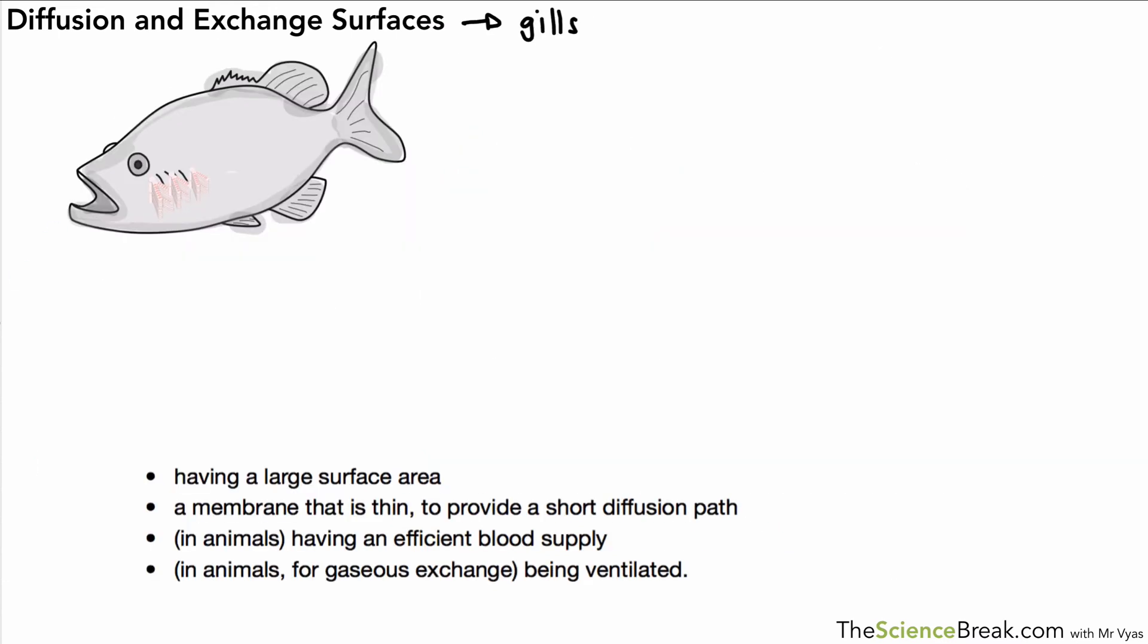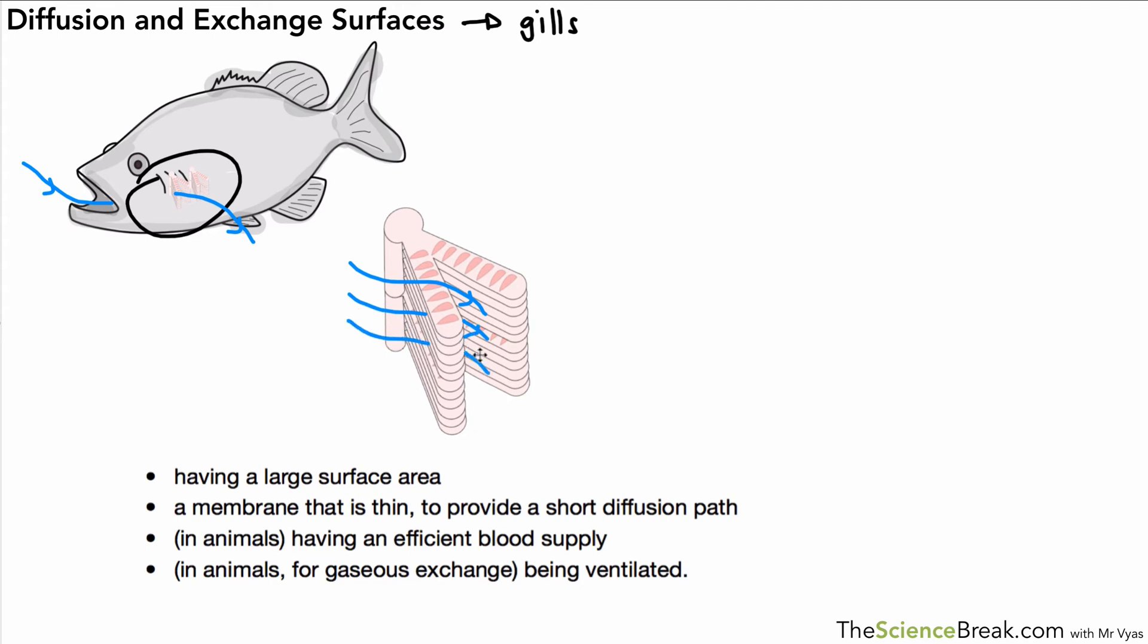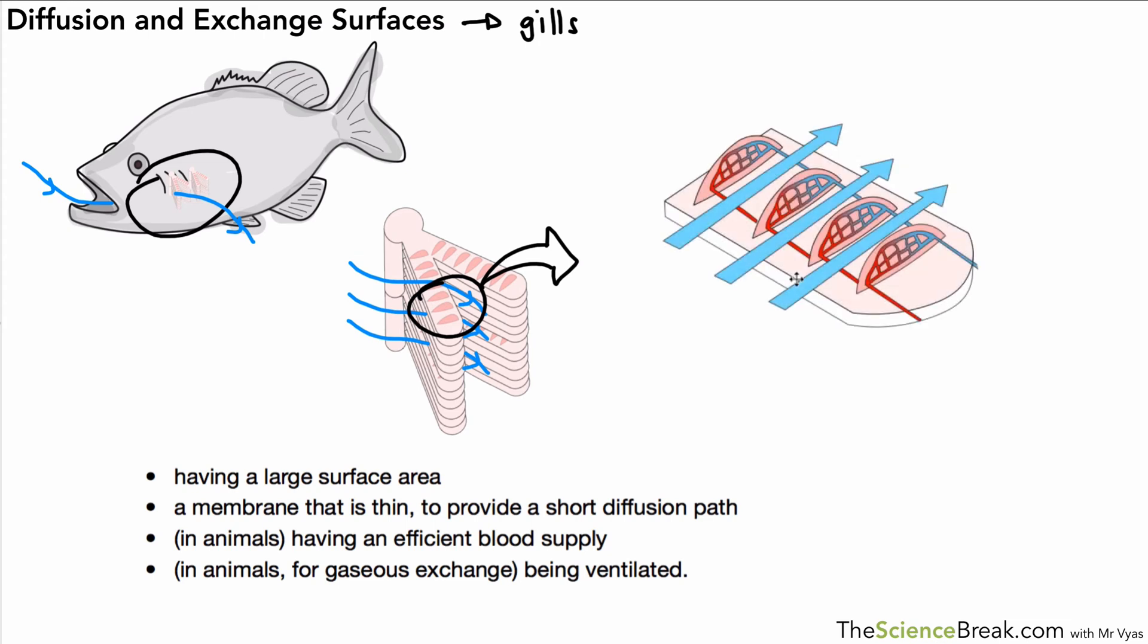The last one I want to look at is to do with structures in fish called gills and that's how fish breathe in water. If you were to magnify one it looks a little something like that. Water goes in through the fish's mouth and flows over the gills. The water has oxygen in it and that oxygen can be removed by the gills.